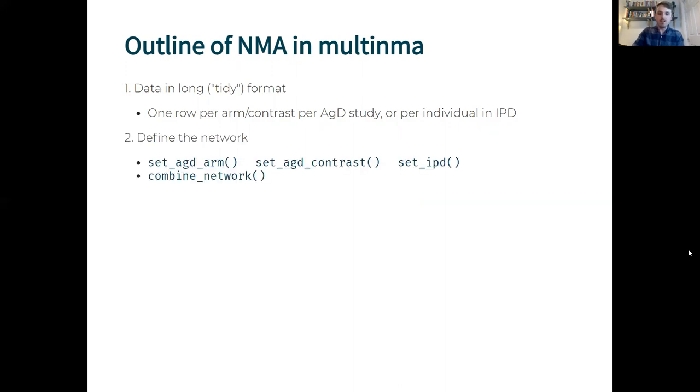We then define the network using set functions to set up the different data types. If we have more than one data type we can combine them together. We then specify our prior distributions and run the analysis using the NMA function. With this we could fit fixed and random effects models, inconsistency models, and regression models.